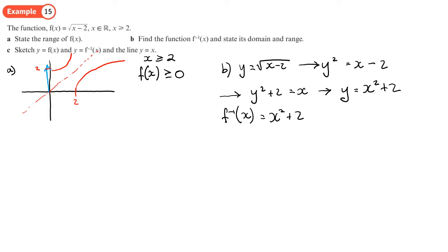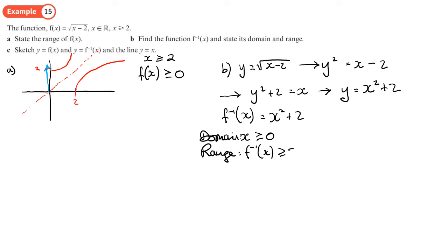The domain and range swap over for the inverse. The domain of f⁻¹ is the range of the original function: x ≥ 0. The range of f⁻¹ is the domain of the original function: f⁻¹(x) ≥ 2. You can see this on the sketch: the inverse graph has x-values starting from 0 and y-values starting from 2 upwards.